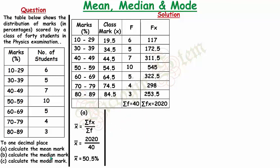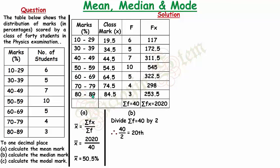Now for part (b), to find the median mark, I need to find half of the total frequency: 40 divided by 2. Since the value is even, I don't need to add one to it. So 40 divided by 2 gives 20, meaning I need to find the 20th mark. Starting from the top, the class interval whose cumulative frequency reaches the 20th mark will be the median class.